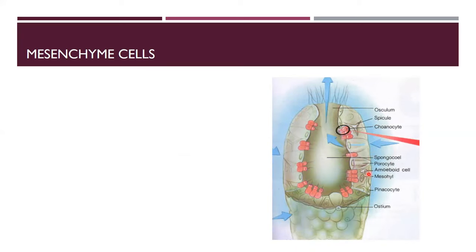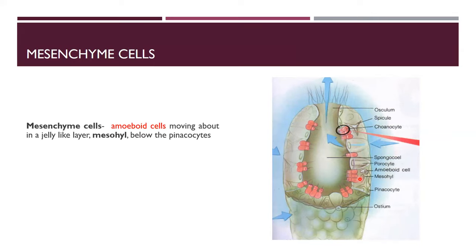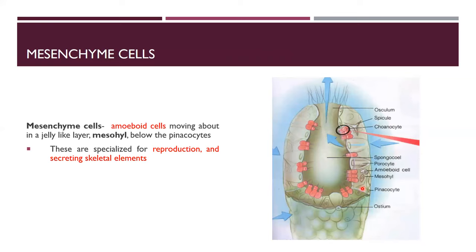Mesenchyme cells are amoeboid cells moving about in a jelly-like layer called mesohyl, located below the pinacocyte layer. These cells are specialized for reproduction and secreting skeletal elements. They produce needle-shaped skeletal structures called spicules and can also transfer gametes.